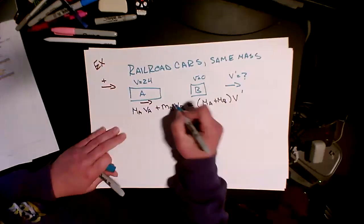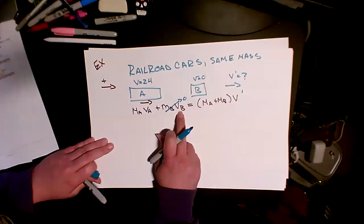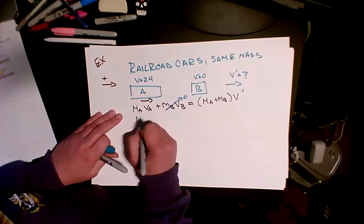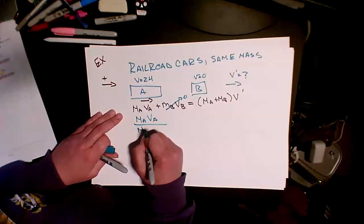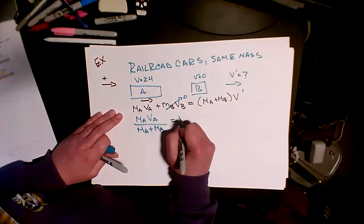Now this simplifies nicely. As I look at this, I'm like, that one goes to zero. This thing is starting off at rest. So what this is saying is that mass A times VA divided by the sum of these masses equals V prime.